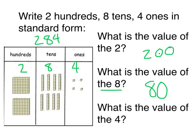What is the value of the four? Four is in the ones place, so I'm going to count by one: one, two, three, four. The four is simply worth four. You've done a great job with this video. Do a great job with your practice.